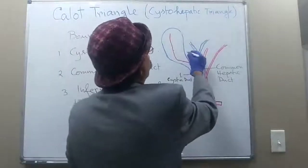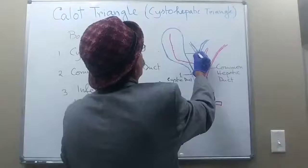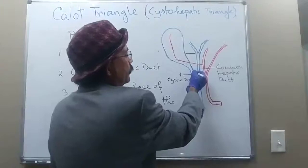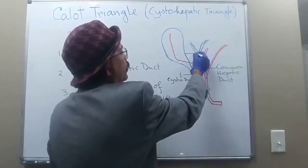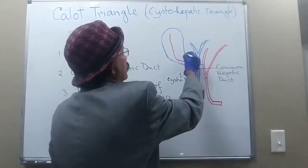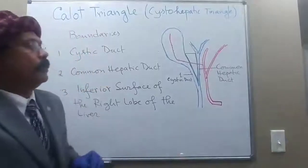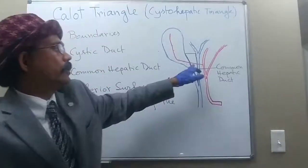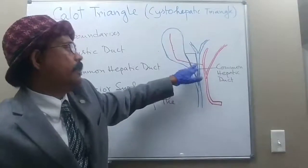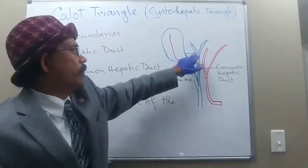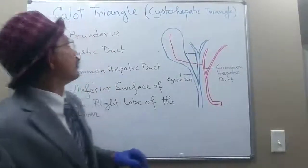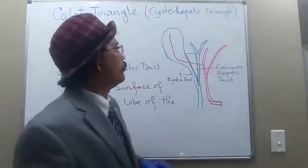So this is the inferior surface of the right lobe of the liver. This is the cystic duct. This is the common hepatic duct. So this is our Calot's Triangle. In the original description by Dr. Calot, he described just this part as the Calot's Triangle. But now the idea has changed — we also include the entire part; this entire triangle is the Calot's Triangle.